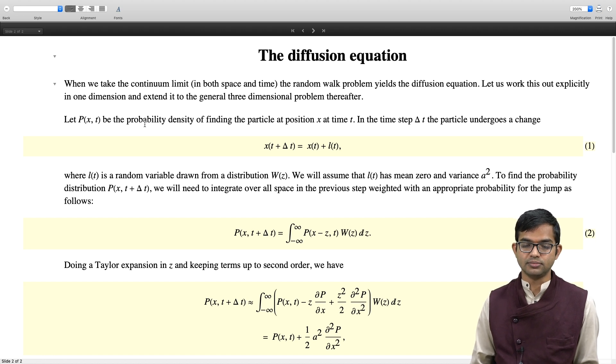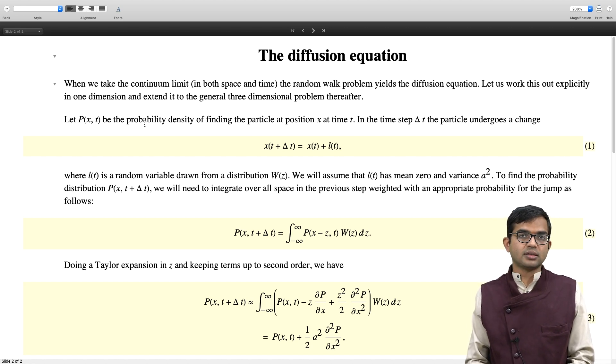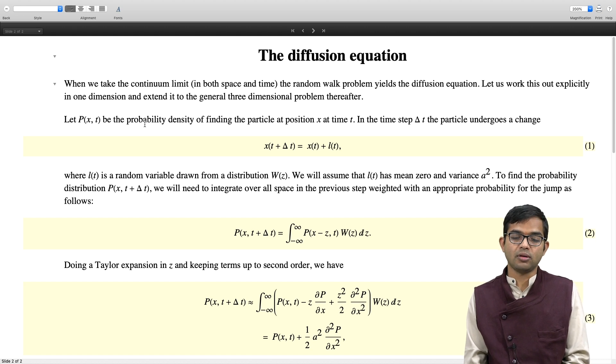We will just assume that this random variable L(t), this distribution has mean 0 and variance a squared. We are not going to assume anything specific about the nature of distribution. Let us say that it has some mean 0, variance a squared. To find the probability distribution P(x, t + delta t), initially it had a certain probability distribution. Now you can still ask what is the probability density of your particle being at x at time t + delta t. We will need to integrate over all space in the previous step. It could have arrived at that position from anywhere theoretically, it is possible. Of course, it is more likely that it has moved into that region from a nearby point, but you have to take care of all possibilities.